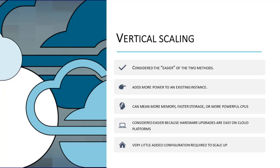Vertical scaling, or scaling up, is often thought of as being the easier of the two scale methods. When scaling a system vertically, you simply add more resources to an existing instance. This could mean more memory, faster storage, or even more powerful processors. The main reason this is considered to be the easier option is that hardware is often pretty easy to upgrade on cloud platforms like Azure, since the servers are already virtualized. There's also typically very little, if any, additional configuration required at the software level.